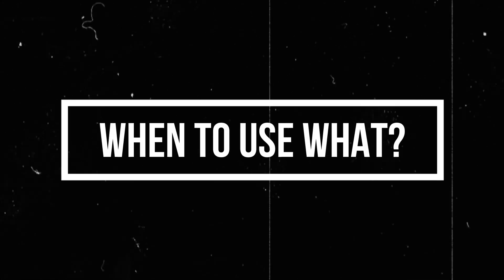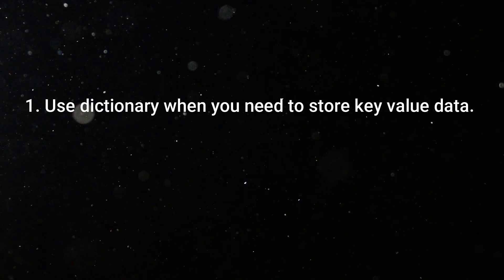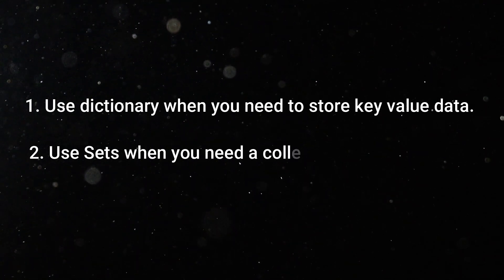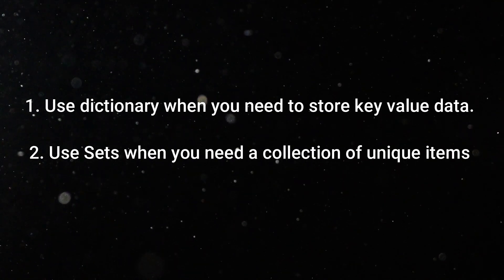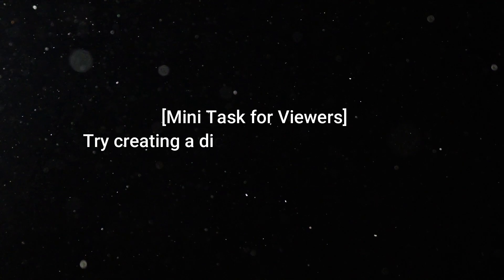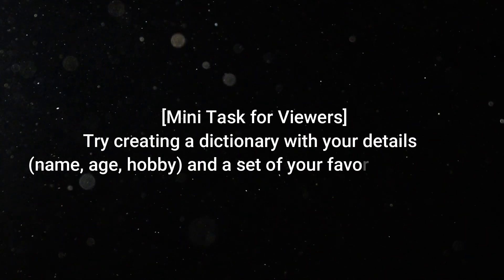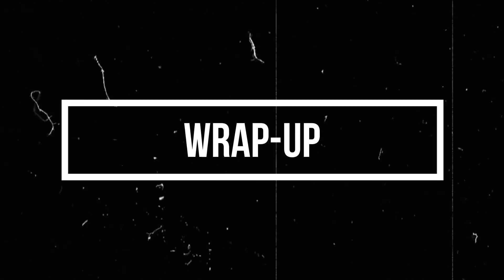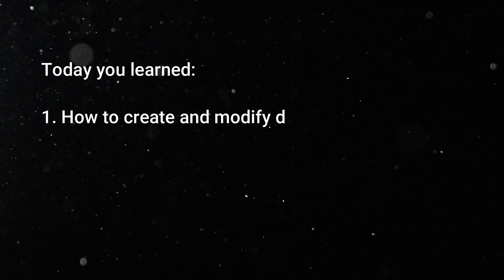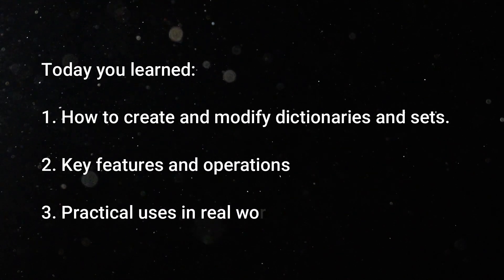Now the important question is: when to use a dictionary and when to use sets? Use a dictionary when you need to store key-value data. Use sets when you need a collection of unique items and want to perform operations like union or intersection. Here is a mini task for viewers: try creating a dictionary with your personal details like name, age, and hobby, and a set of your favorite numbers. Today you learned how to create and modify dictionaries and sets, their key features and operations, and their practical uses in real-world applications.